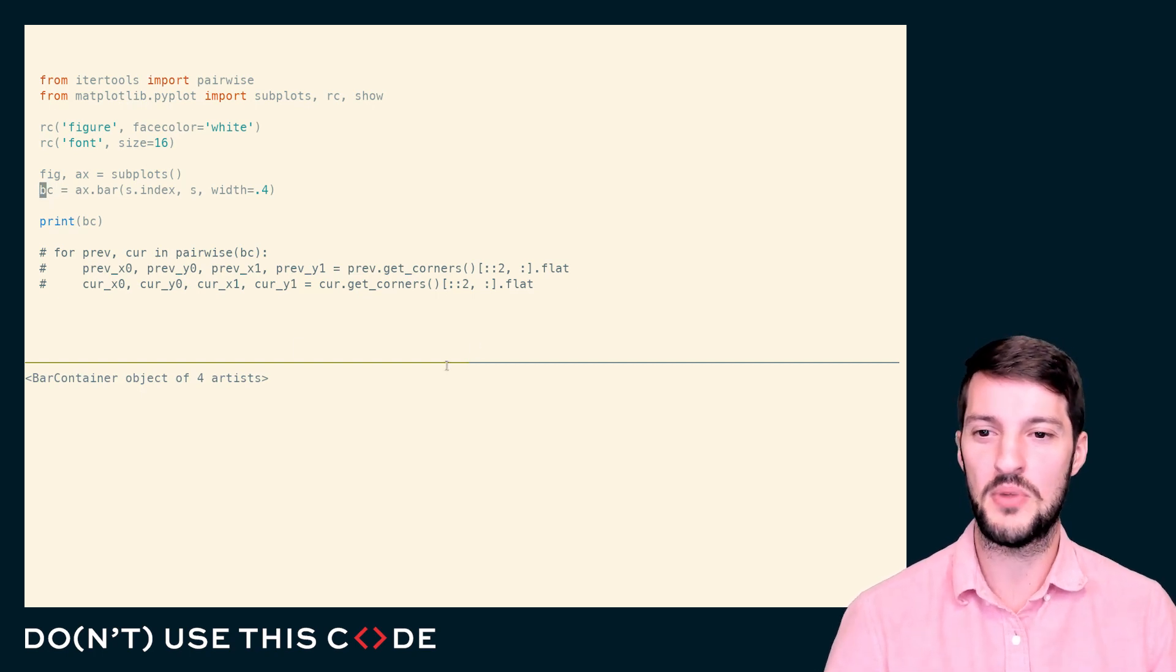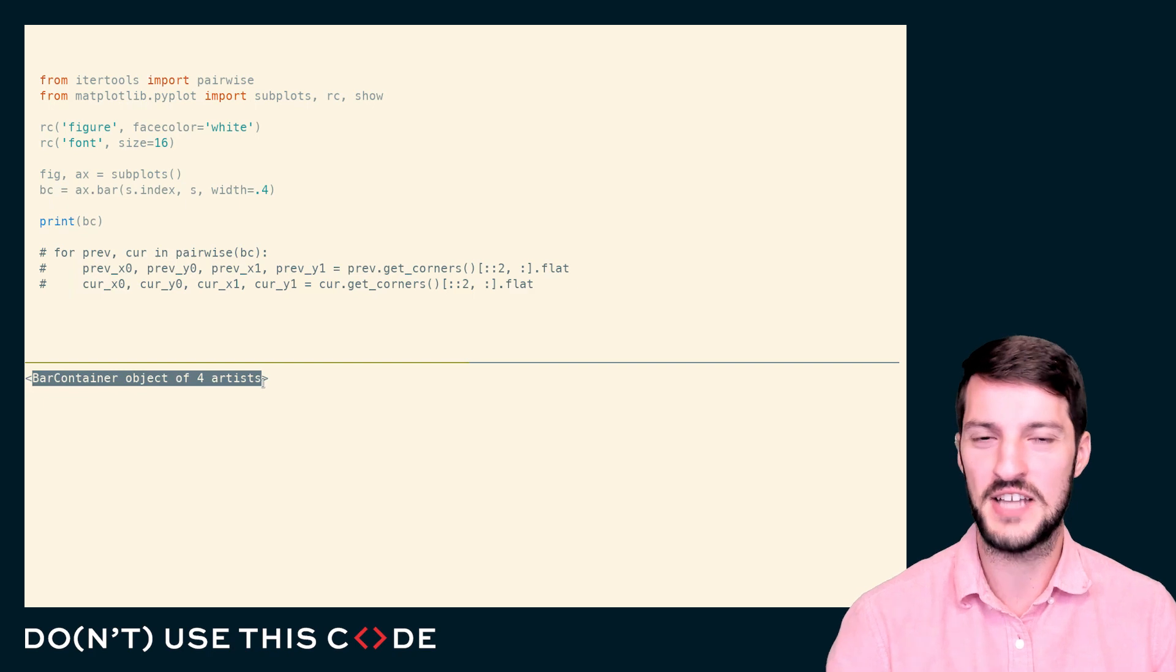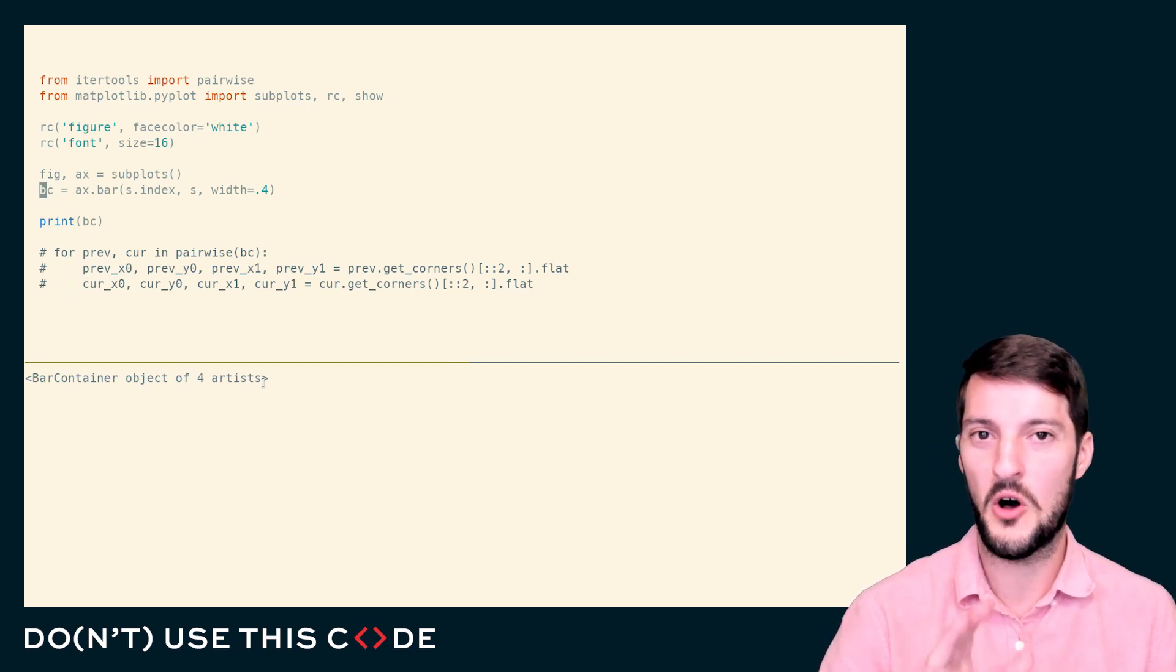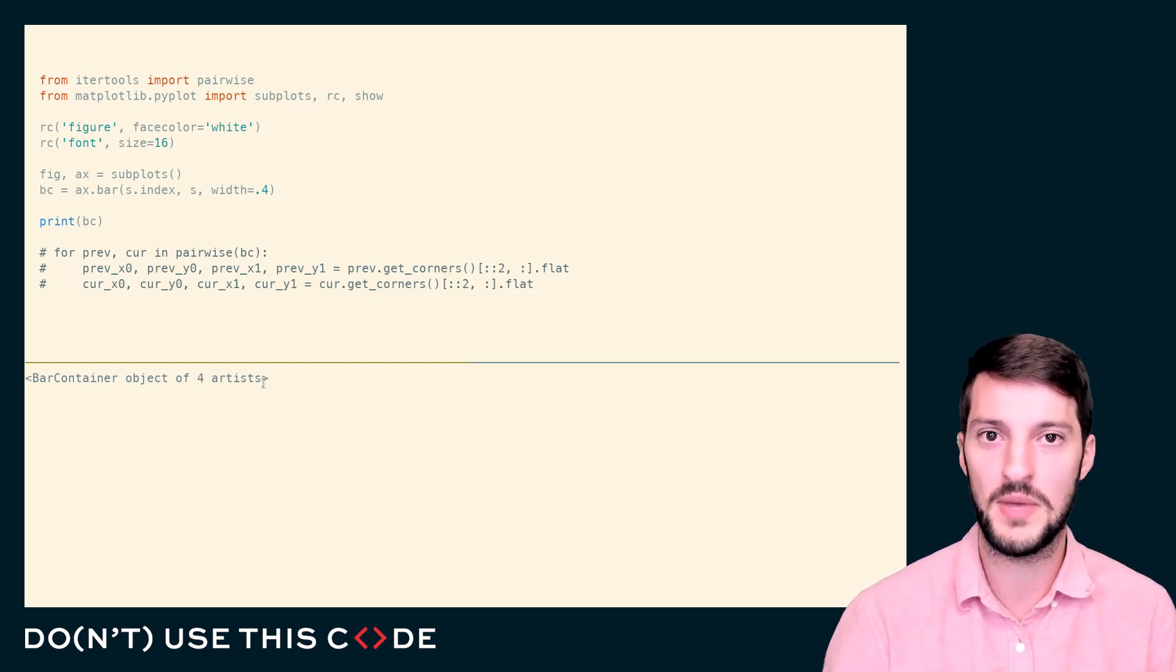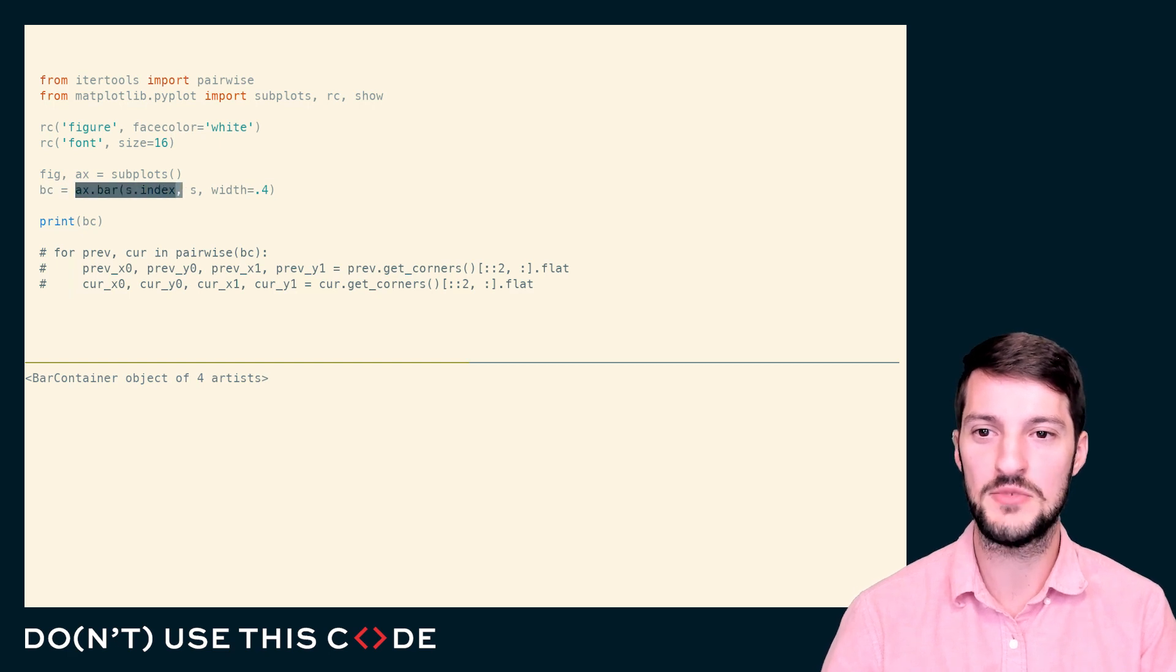It returns this thing called a bar container. Matplotlib has this notion of containers. Containers, you can think of almost as lists of elements. What this is telling me is that I actually have a list of four artists. Artists are the thing that are actually drawn onto my screen. In this case, it's a list of four rectangles because a bar chart is represented just by rectangles. This is the middle level layer of matplotlib's API. We have rectangles, we have circles, we have all these different shapes that we can do with our plotting.